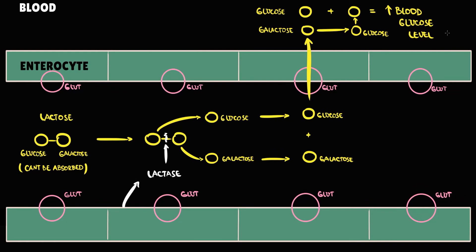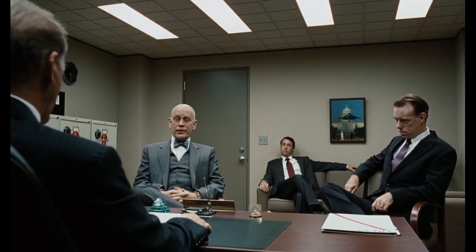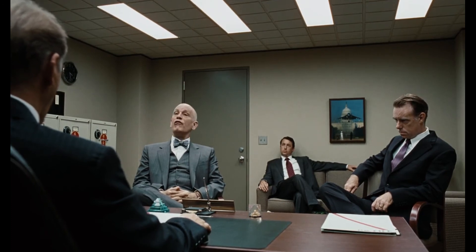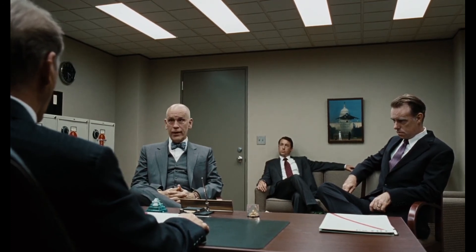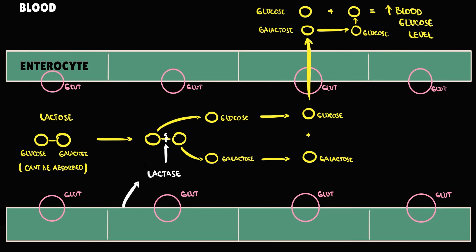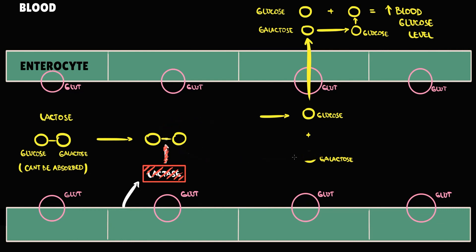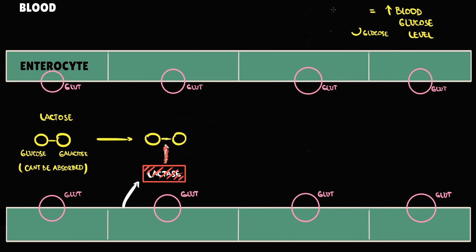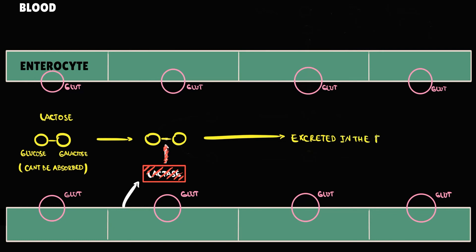But in some cases this process can be disrupted. For example, if we do not have the lactase enzyme, we cannot degrade disaccharides into monosaccharides. And because we cannot absorb disaccharides, absorption will be impossible — there will be no elevation in blood glucose level. Instead, lactose will simply be excreted in the feces.